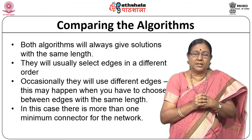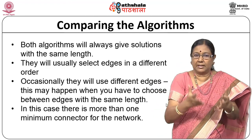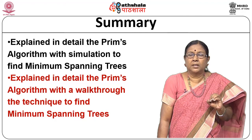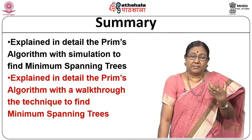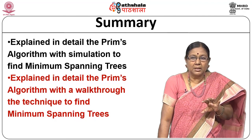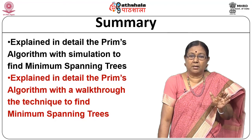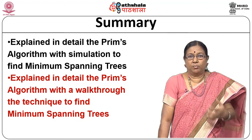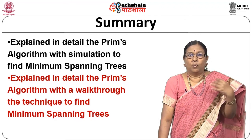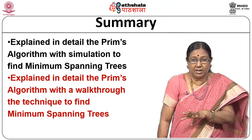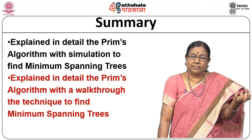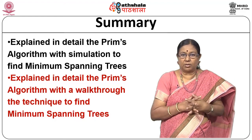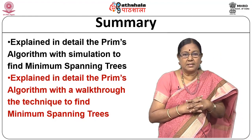In this module we have explained the Prim's algorithm with a simulation to find the minimum spanning tree. We have brought out the difference between Prim's algorithm and Kruskal's algorithm. Both algorithms give you the same minimum weight and are trying to find the minimum spanning tree, but the approaches are completely different: one uses edges, one uses nodes; one needs to see the whole graph at once while Prim's does not. In Kruskal's you have to check whether a cycle is formed when you add an edge; here that does not arise because you are adding a node. Thank you.